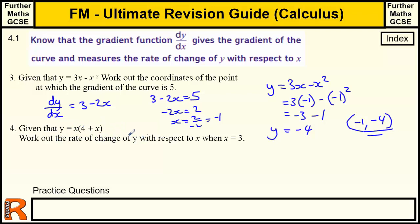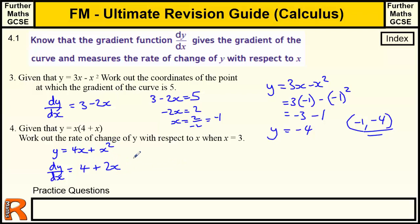Work out the rate of change of y. We need to multiply out the bracket first to be able to differentiate. y equals x times 4 which is 4x, plus x times x which is x squared. Once we have it in separate powers of x, we differentiate to get the rate of change function. Differentiating 4x gives 4, and x squared gives 2x. When x equals 3: dy by dx equals 4 plus 2 times 3, which is 6, giving a total of 10.